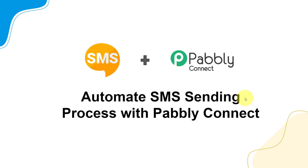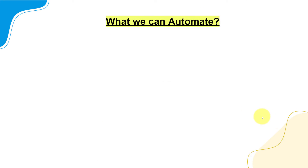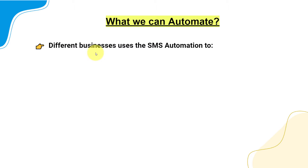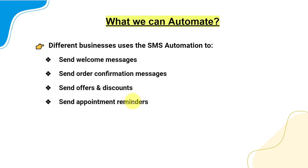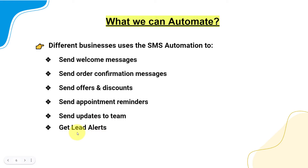The topic for today's video is how to automate the SMS sending process with Pabbly Connect. Different businesses use SMS automation to send welcome messages to their customers, order confirmation messages, or offers and discounts to their clients. One can also send appointment reminders to patients, automate sending updates to team members via SMS, get lead alerts on their phone number, and receive bill reminders and other important notifications.